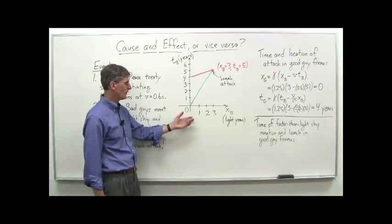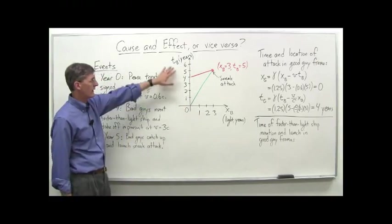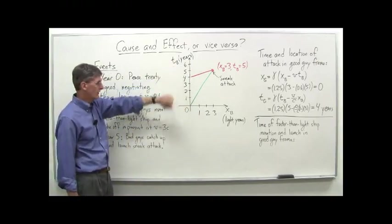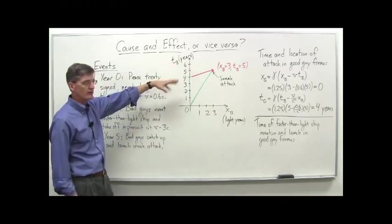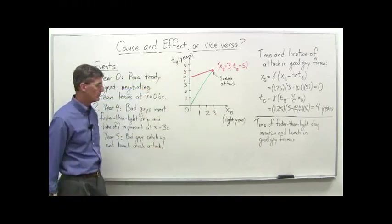So diagrammatically, on a space-time diagram, this is what it looks like. So this is the frame of reference of the bad guys, for B here, for bad guys. It's in light years and years, so the velocity of light is one, light year per year here.